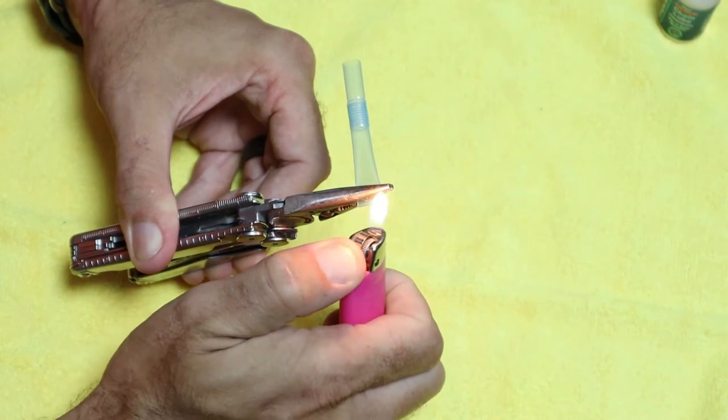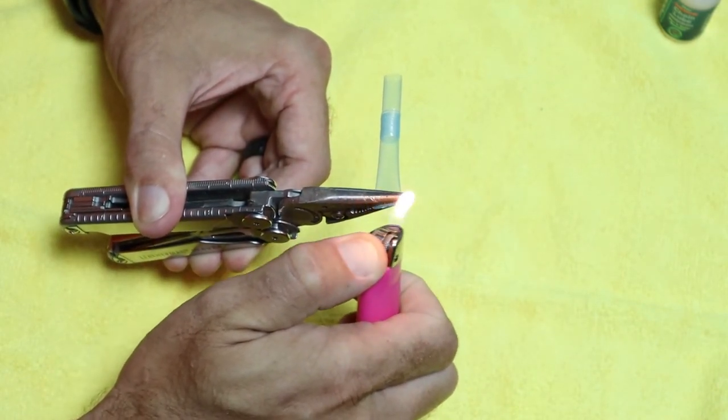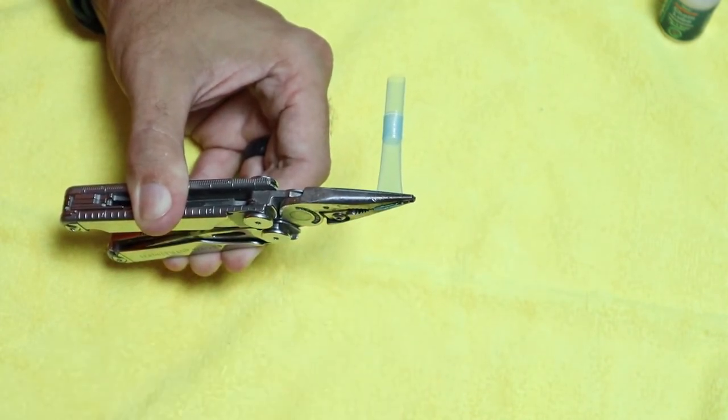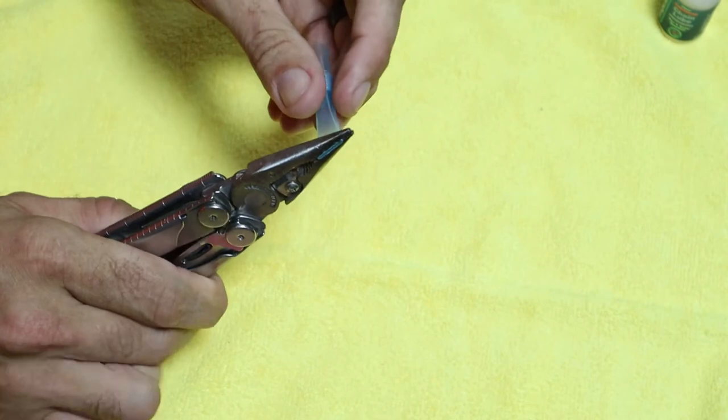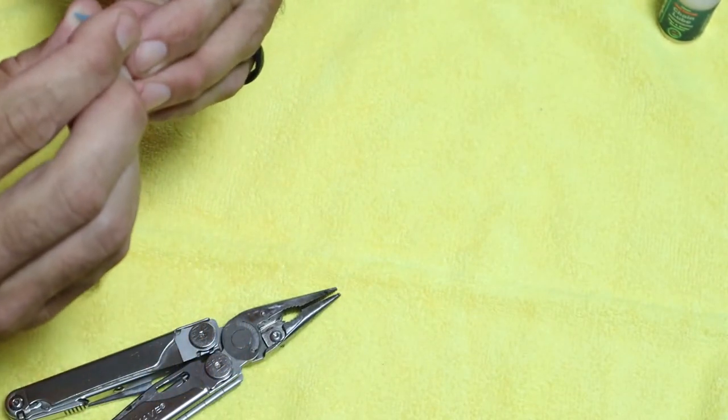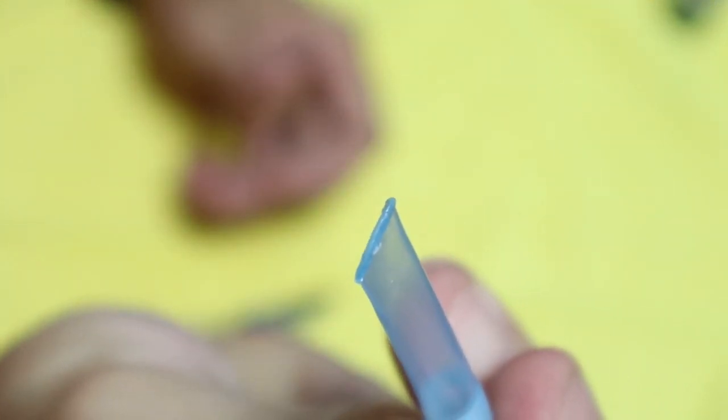I'm just going to take a lighter. I'm going to melt that all the way down, all the way down to the pliers. Set the lighter aside. Now you can see it's not real hot. You can make sure that is good. We can see the end there. We're clamped down.